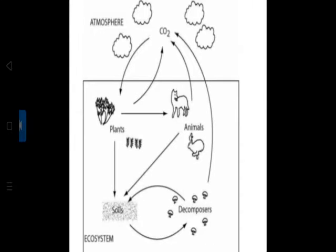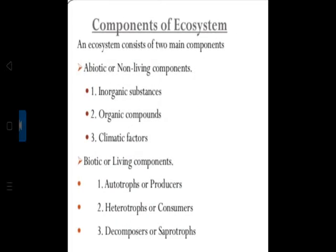Looking at this picture, it shows what the ecosystem consists of: plants, animals, atmosphere, decomposers, soil, carbon dioxide. The ecosystem is a core concept in ecology and biology as it serves at a level of biological organization where organisms interact with the environment.